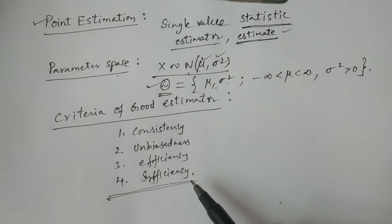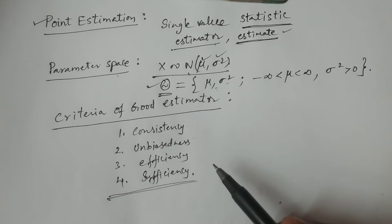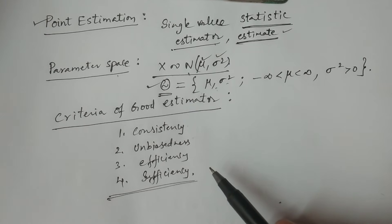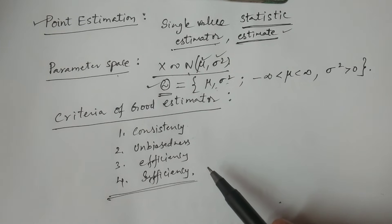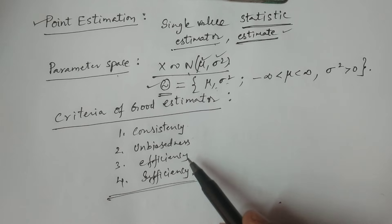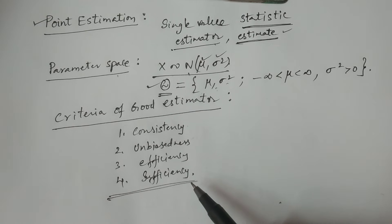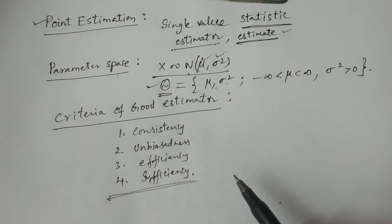Of course, it is not always possible for any estimator to satisfy all four properties — consistency, unbiasedness, efficiency, and sufficiency — to the maximum extent. In many cases, it is not possible. Any estimator that satisfies the maximum number of properties can be said to be a good estimator. But if a particular estimator satisfies all four properties, it is called the best estimator in the theory of estimation, particularly in point estimation, because we use a single statistic to estimate the population parameter.